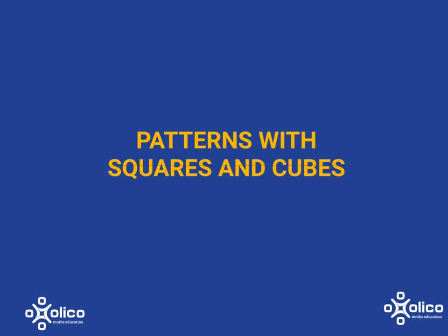So far we've looked at patterns where there's a constant difference, in other words where you add or subtract the same thing to each term to get to the next term, and also we've looked at patterns where there's a common ratio, those are where you multiply or divide each term by the same thing to get to the next term.